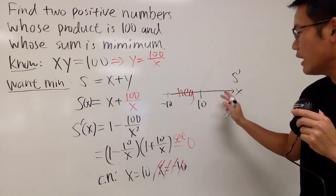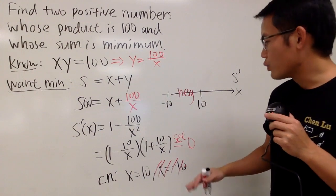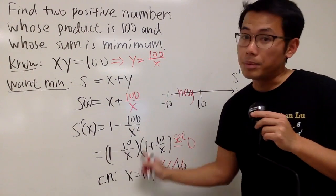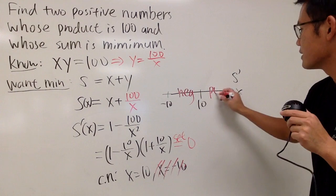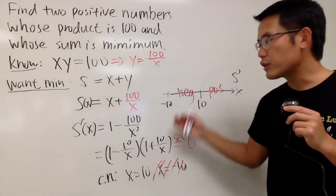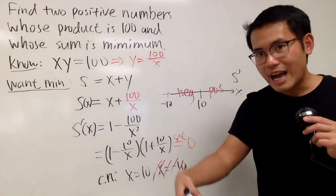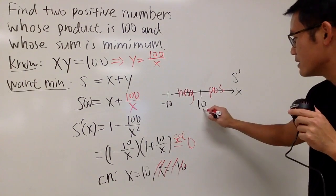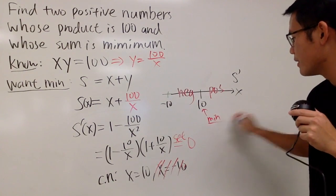And when we have a number bigger than 10, let's say 25 or something, that would be positive. That would be positive. So we have positive. So as you can see, when x is equal to 10, we actually get the function going down and then go up. Therefore, this is a minimum.